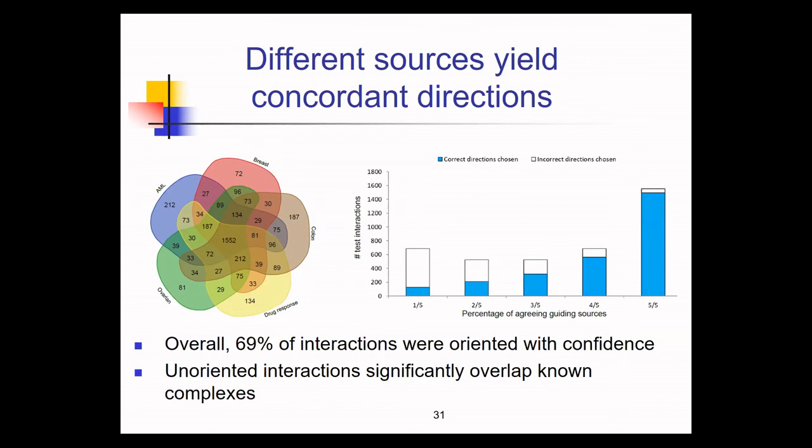Then we have a question about disease specificity. So can we construct the disease specific oriented PPI based on this method? So the answer is yes. So if our causal information is taken from a specific disease, then the orientation will reflect the biology of that disease. And again, you can see in the slide that I'm showing now that we actually oriented the network using different cancer types in this case. And we got relatively concordant orientations, but also some differences that reflect the biology of the disease.